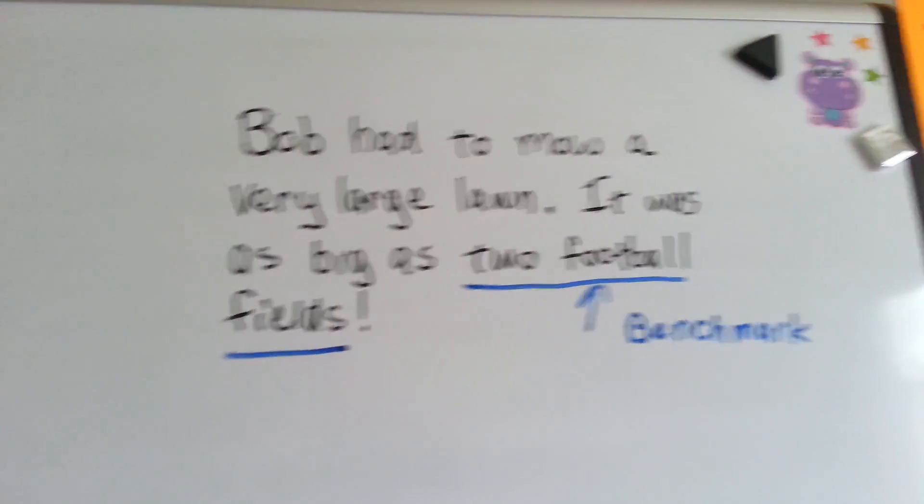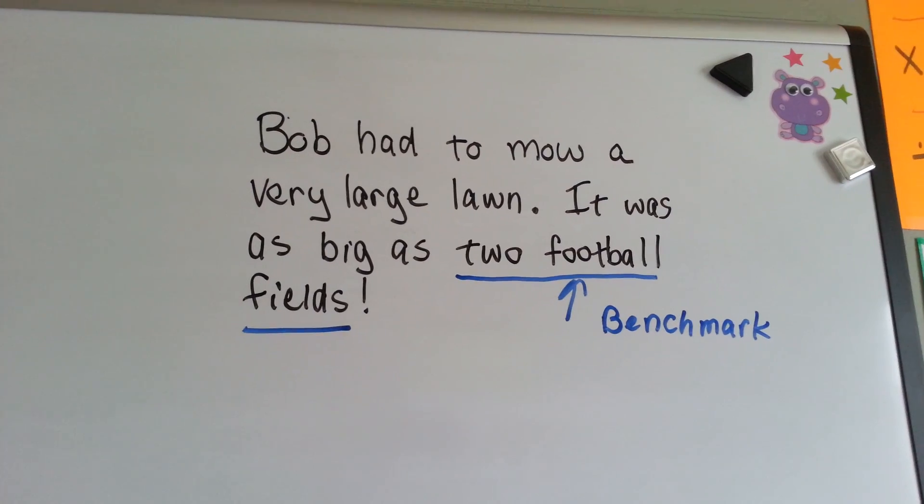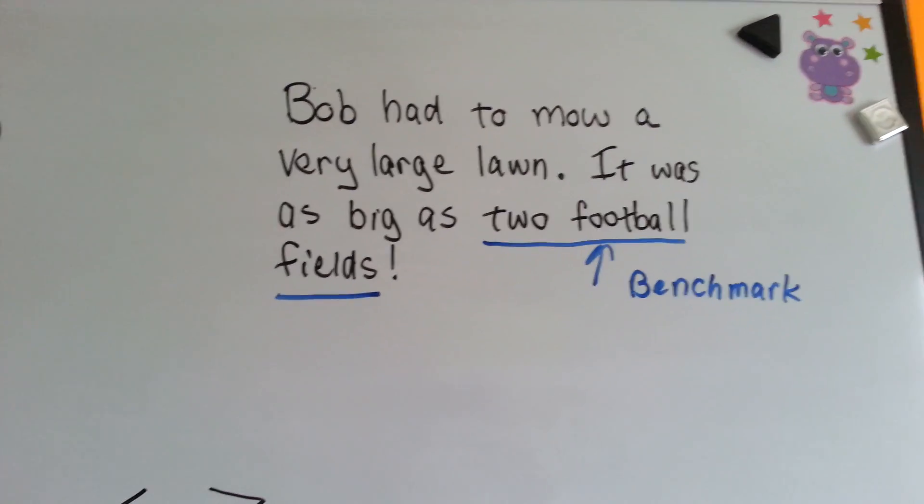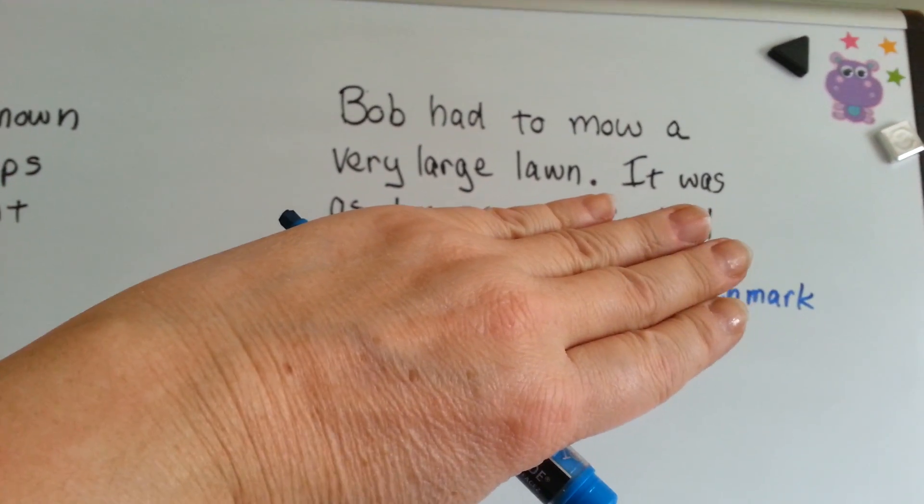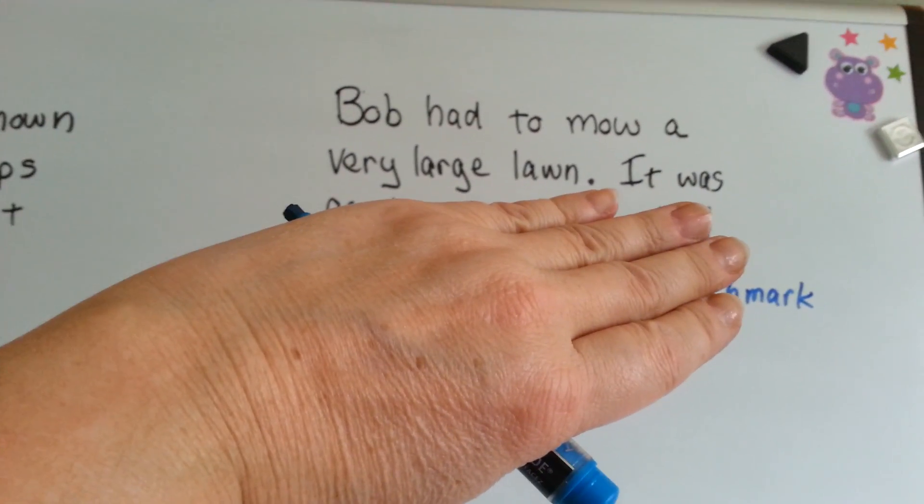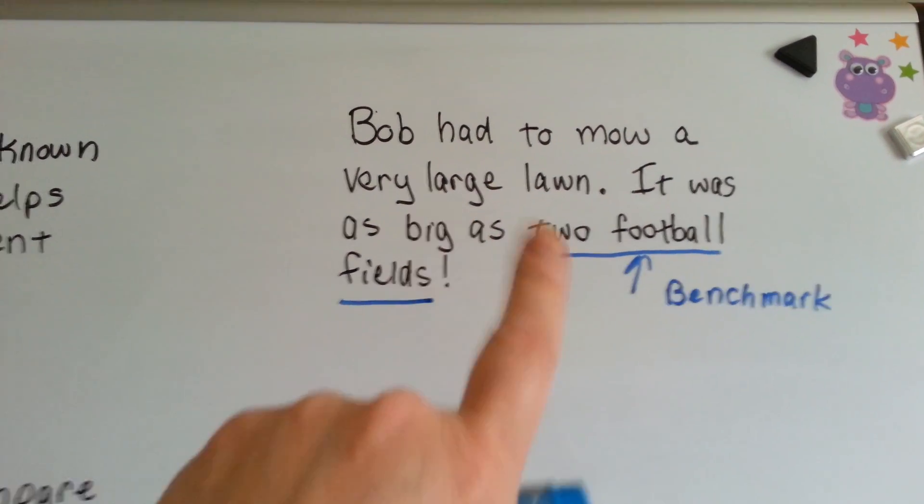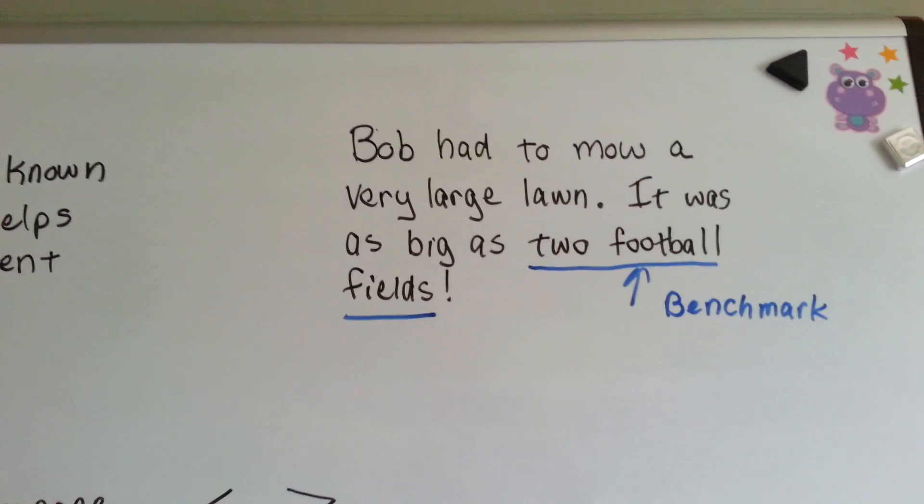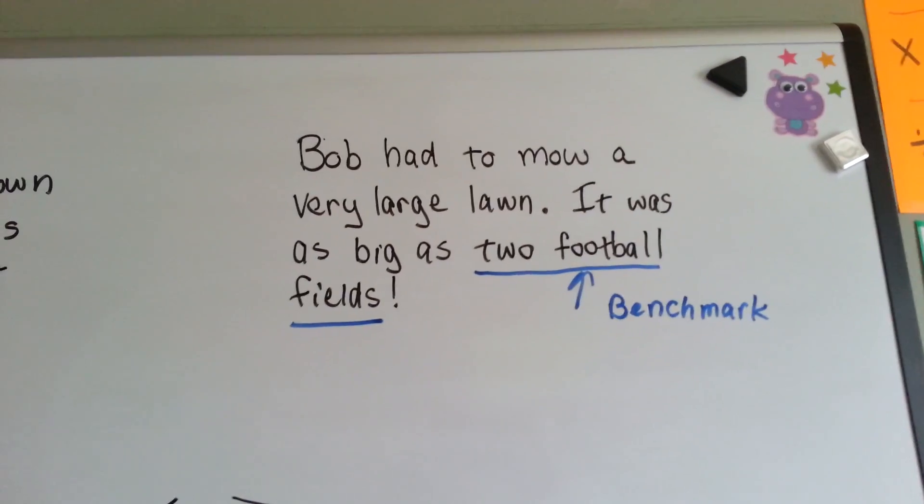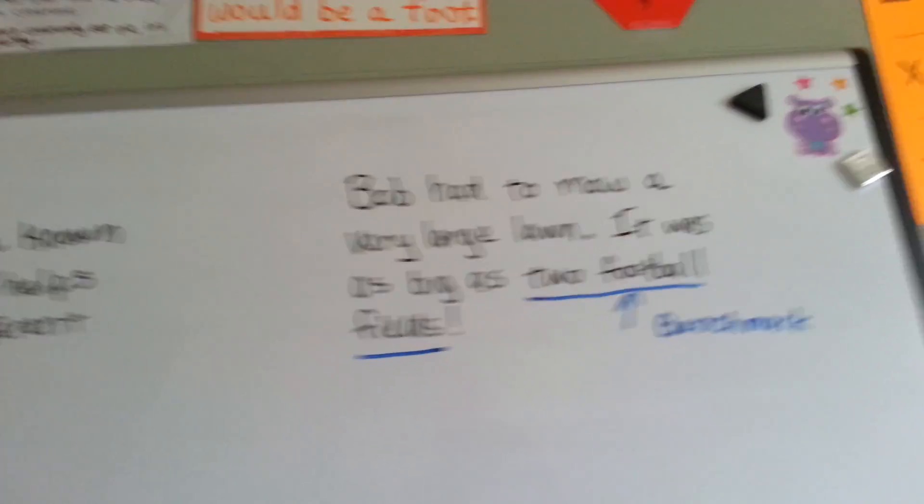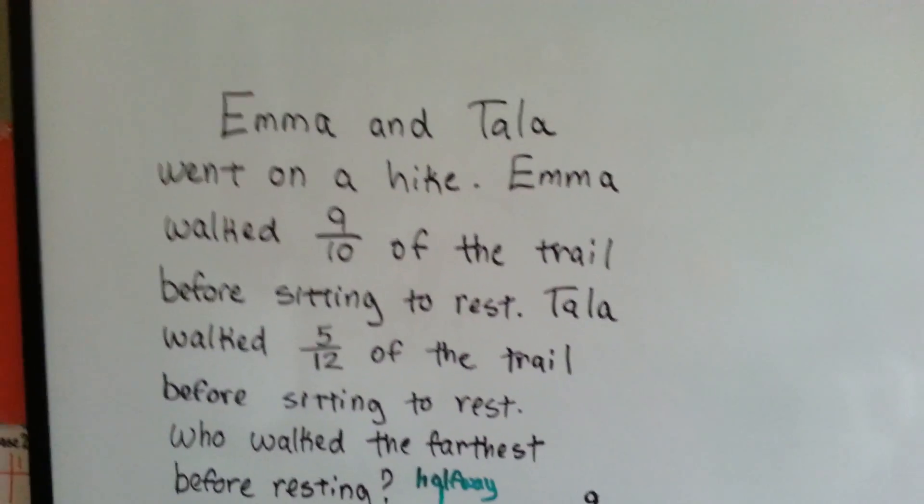Take a look at this. Bob had to mow a very large lawn. It was as big as two football fields. When you read the first sentence, you think, what do they call a very large lawn? Like two houses? But when I say it's as big as two football fields, you say, oh my gosh, yeah, that is a huge lawn, right? Because the size of the football fields in your head gives you a benchmark for a size. It helps guide you. Well, that's what we're going to do. We're going to use these benchmarks to help us figure out fractions.